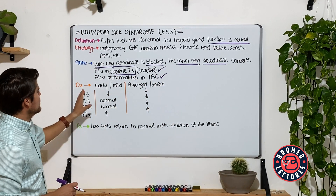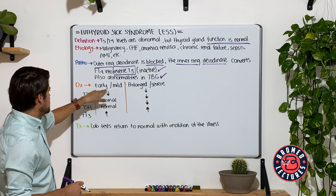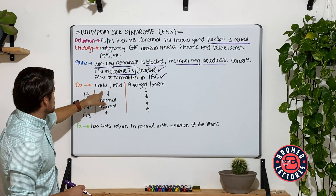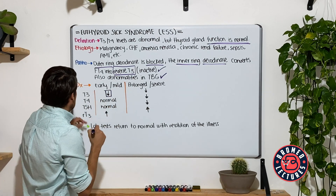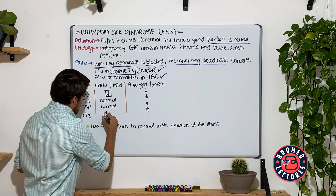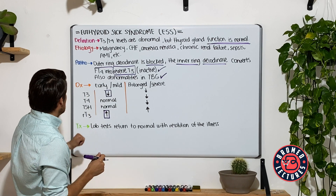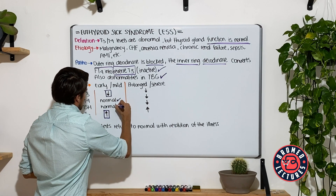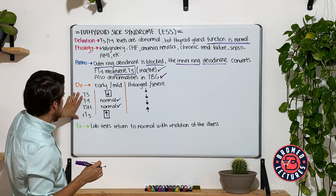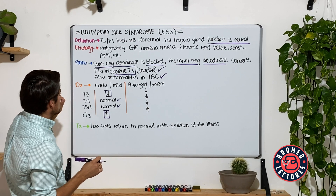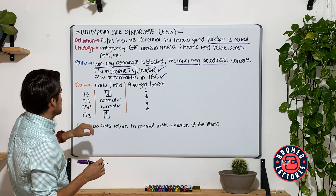For the diagnosis, notice that there are two different states in which you can find your patient: either an early mild state or a prolonged severe state. In the early mild state, T3 is going down and reverse T3 is going up, as mentioned, because of the inner ring deiodinase. T4 and TSH are going to be normal, because the thyroid gland and anterior pituitary are able to keep up with this condition — this is the reason the patient remains euthyroid.